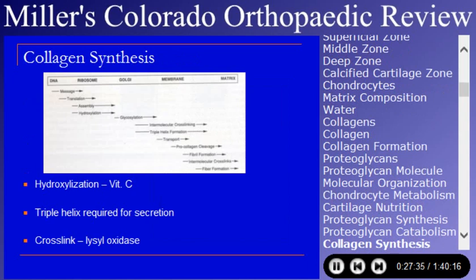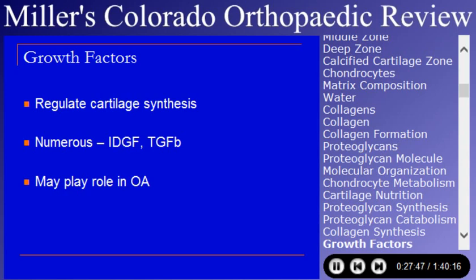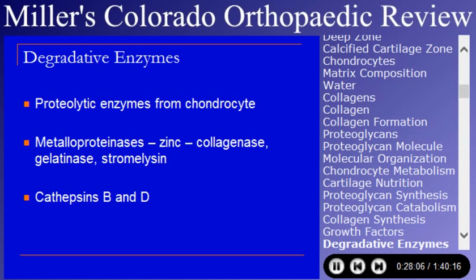Collagen is vitamin C-dependent for hydroxylation — that gets asked occasionally. Growth factors are popular; we're in the infancy of using them clinically. They regulate cartilage synthesis, and there are many types that may play a role in primary osteoarthritis. Degradative enzymes are numerous — that's in part how cartilage gets broken down. Common proteolytic enzymes are the metalloproteinases, and the metal they have in common is zinc.